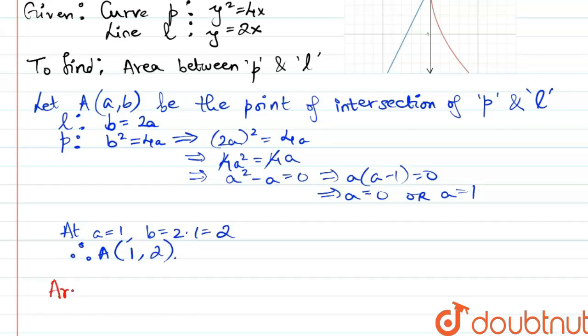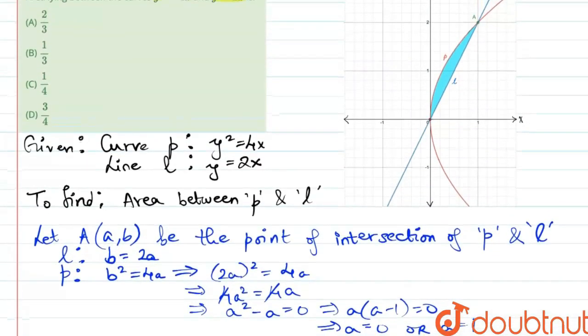Now, the area that we are supposed to find, as we can see from the figure, is the area under the curve y² = 4x from x = 0 to x = the x-coordinate of A, minus the area under the line from x = 0 to x = x-coordinate of A. Basically, we have to subtract this area from the area under the given curve.